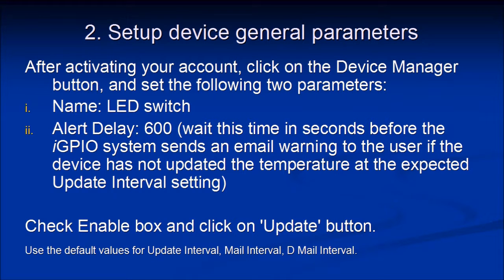To set up the device general parameters, you would click on the device manager button and set two parameters: the name, which we'll call in this example LED switch, and an alert delay parameter — in this case 600 — which is the time in seconds before the IGPIO system would send you an email warning if the device has not updated the LED switch at the expected update interval setting.